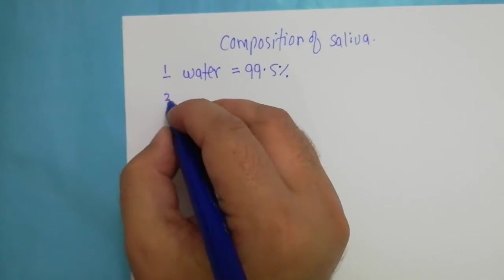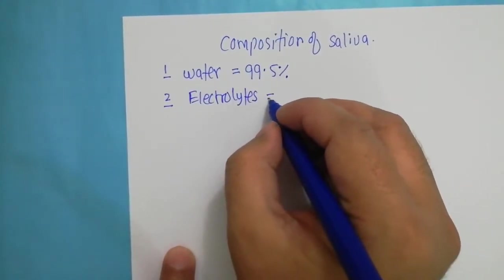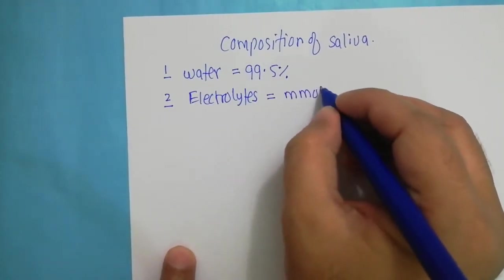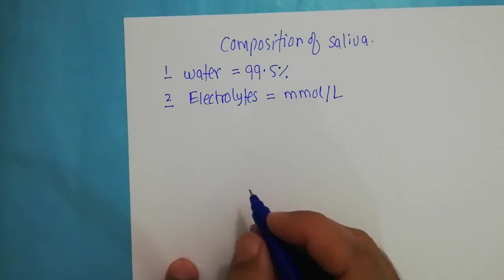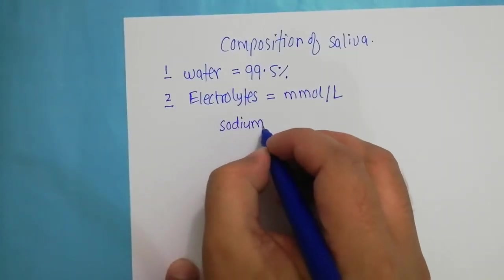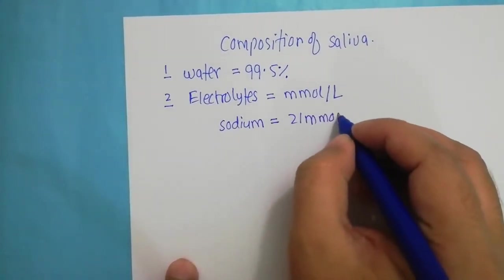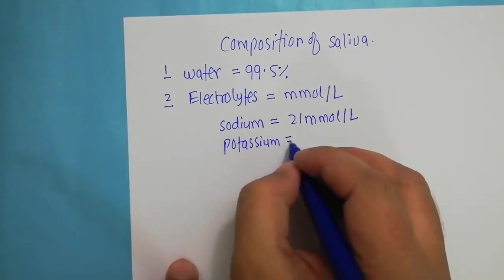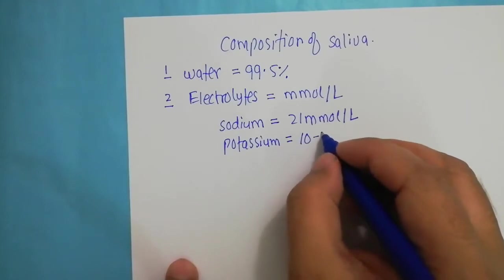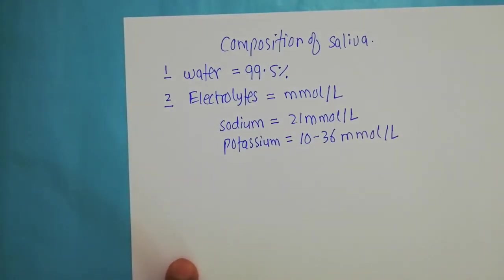Another important component present in the saliva is electrolytes. These electrolytes are present in very small quantities and are usually measured in millimoles per litre. Some important electrolytes include sodium, with a concentration of about 21 millimoles per litre, and potassium, with a concentration usually between 10 to 36 millimoles per litre. These are the normal concentrations of these electrolytes in the saliva.